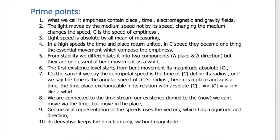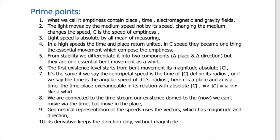At c-speed, time and place become one thing — the essential movement which composes the emptiness, and the light moves by it. So the emptiness is the resource and the end of any power. From stability we differentiate it into two components: delta place and delta direction — but they are one essential movement. The first existence level starts from bent movement, its magnitude absolute c.